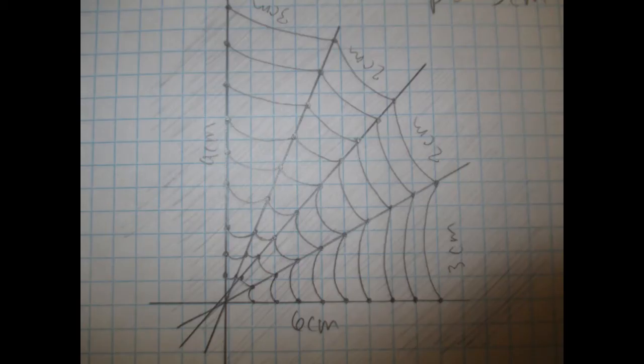We then took the measurements of the model. The perimeter was 25 centimeters, and the area was 27 centimeters squared. We found the area by multiplying the base by the height.